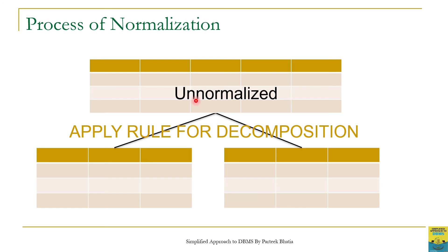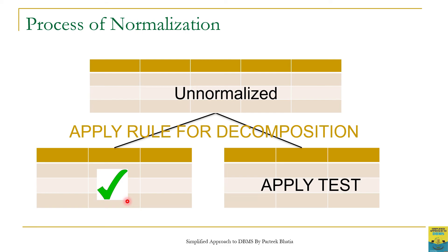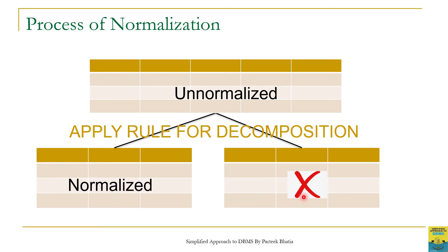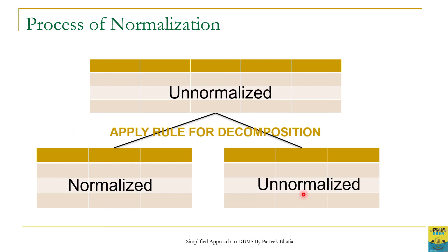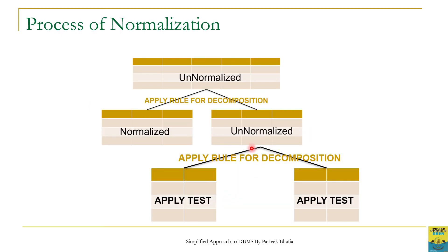As shown here, we have an un-normalized table. We apply some rule of decomposition over the un-normalized table. After decomposition, let us suppose we achieve two tables. We then apply the test on these tables individually. If one table satisfies the test, it is considered normalized. If the other table fails the test, it is considered un-normalized and we decompose it further into smaller tables.